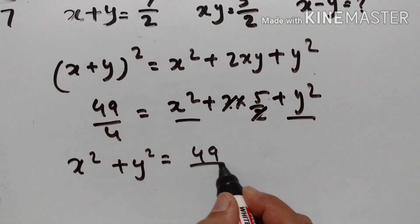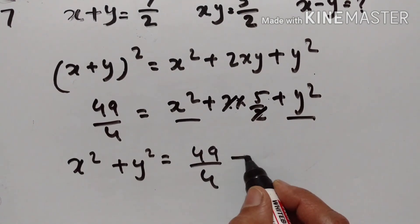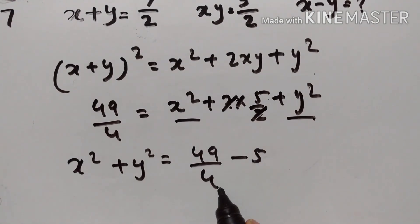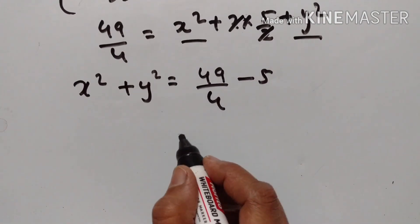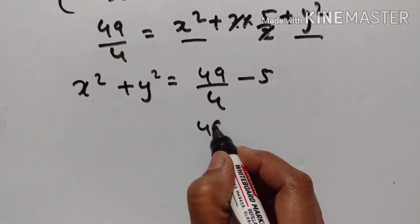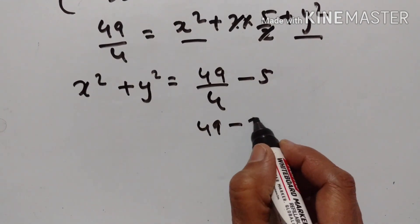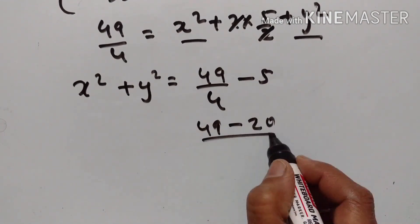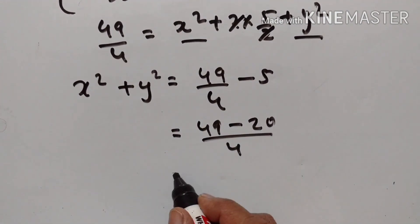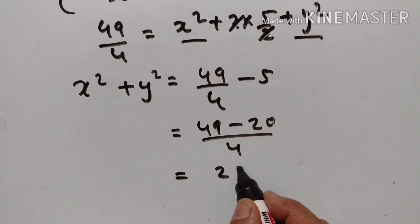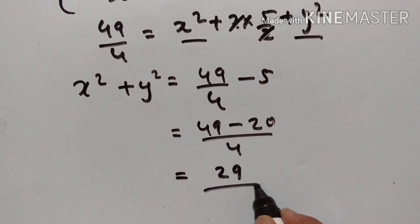49/4 minus 5 equals 49 minus 20 all over 4, which equals 29/4. So X² + Y² = 29/4.